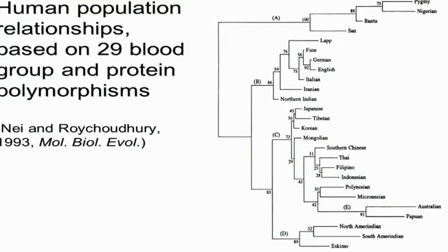This has been known for a while. This is a review published 20 years ago, based on data generated in the 70s and 80s using blood groups and protein polymorphisms. With just 29 of those loci, you see very much the same pattern. So you really don't need that many loci to get the basic pattern of interpopulation genetic variation.